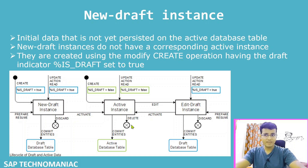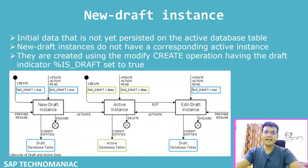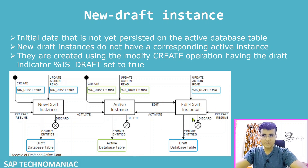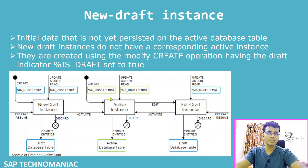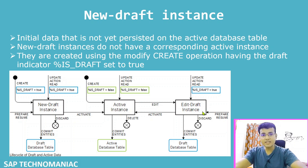Once data is saved, the third state comes into play. If you want to change data already available in the active database table, the edit action copies the data from the active data table to the edit draft instance. Once you are happy with the changes, you activate it again and the active instance is saved to the active database table. The key difference: in a new draft instance the data does not already exist in the active table, whereas in the edit draft instance the data is already there and is being copied for modification.